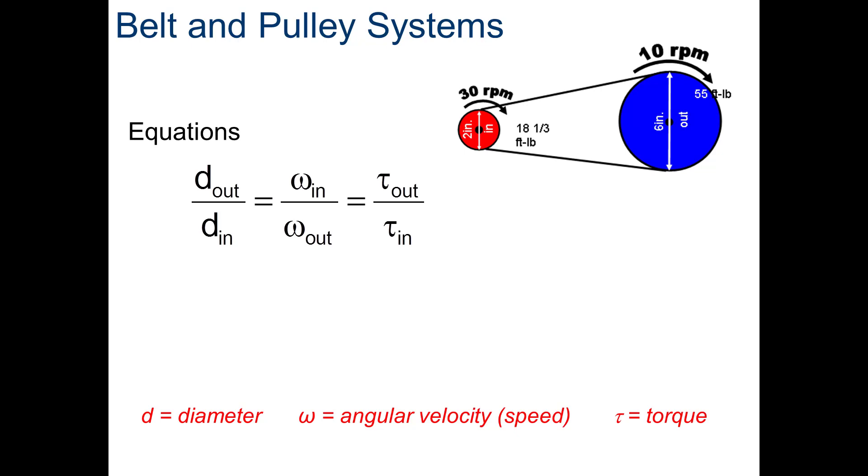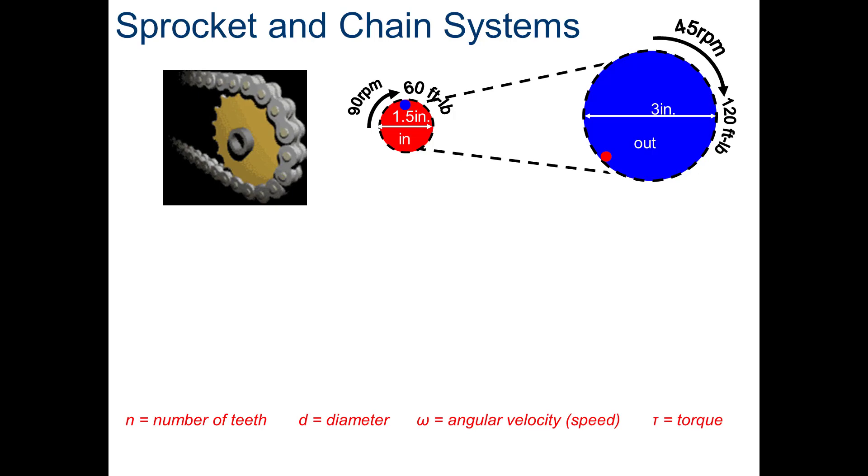One thing you will notice about belts and pulley systems is look at the red and blue pulley and note the direction of rotation. With belts, any time the belt goes around the exterior of the pulleys, they rotate in the same direction. If, for some reason, you do the belt on the outside of the loop of belt, they will rotate in the opposite direction. So, let's look at the calculation. 6 inch out divided by 2 inch in or 30 RPMs in divided by 10 RPMs out. Or we could do 55 foot-pounds out divided by 18 and a third foot-pounds in. And any of the ways we cut it, we get a 3 to 1 reduction.